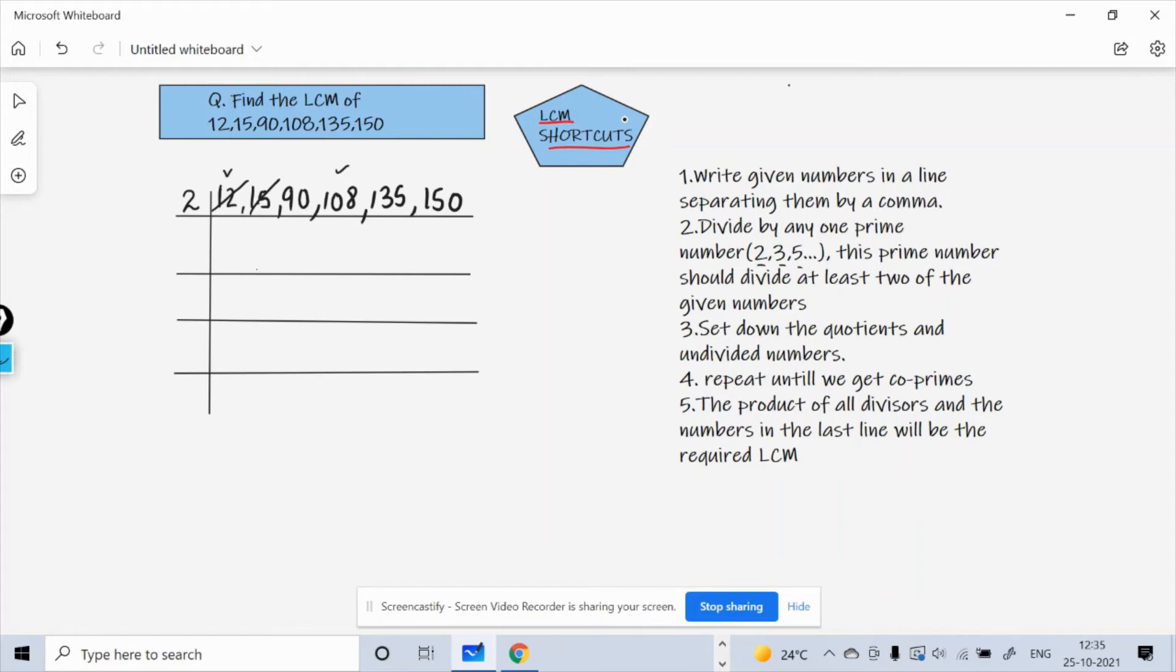So now I can see some even numbers here. I take a divisor as two, it is a prime number, so I will write the quotient here. I write the quotient of 108, so I get 54 when you divide 108 by 2.